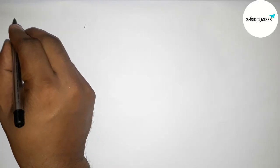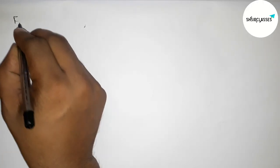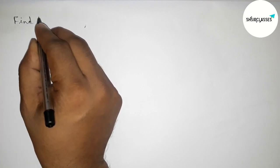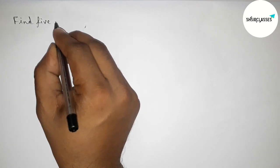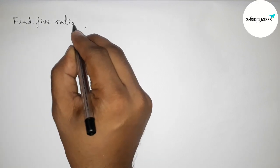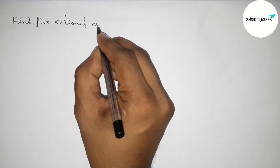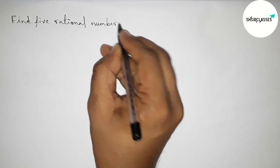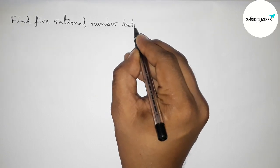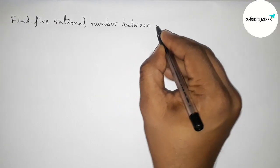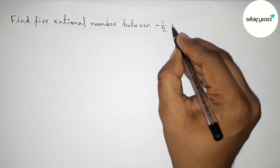Hi everyone, welcome to SI Share Classes. Today in this video we have to find 5 rational numbers between minus 1 by 2 and 1 by 2 in an easy way. So please watch the video till the end. Let's start the video.